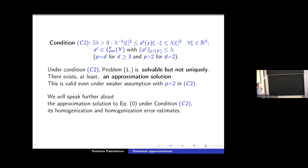And if we are discussing only solvability of the problem one ε, it is enough to require exponent p equal to two in condition two. But for our goals of homogenization, we must increase the value of this exponent to d, even greater in two dimension. Now we will speak about approximation to the solution zero.